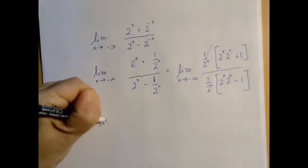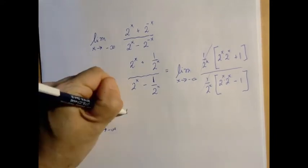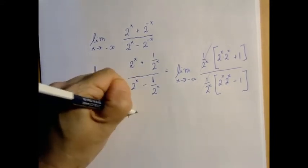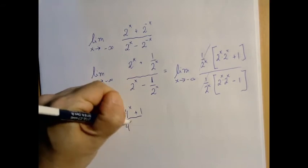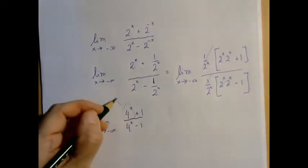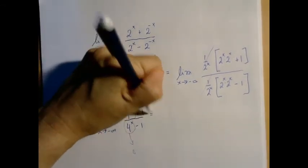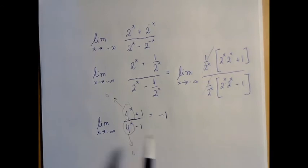So what we have is the limit as x approaches negative infinity of 4 to the x plus 1 divided by 4 to the x minus 1. Remember x is a large negative number, so these two pieces now approach 0, which means that our limit is negative 1. So the closer this quotient is to negative 1.